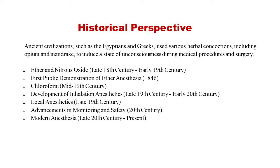The history of general anesthesia is a fascinating journey that has transformed the field of medicine and surgery, allowing patients to undergo complex and often painful procedures without experiencing pain or consciousness. In ancient times, civilizations such as the Egyptians and Greeks used various herbal concoctions, including opium and mandrake, to induce unconsciousness during medical procedures. During the late 18th and early 19th century, significant developments took place with the discovery and exploration of substances like ether and nitrous oxide.